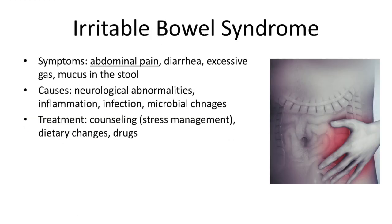I would like to highlight a pathology associated with the innervation of the GI tract. Irritable bowel syndrome occurs as an association of symptoms, among which are abdominal pain, diarrhea, or mucus in the stool. It can be caused by stronger contractions in the intestines, inflammation, infection, or changes in the microbiome. However, I would like to focus on the neurobiological abnormalities that may cause oversensitization to normal stretching. In this case, there is poor coordination of signals between the brain and the intestines.